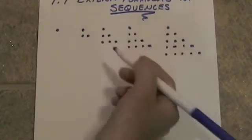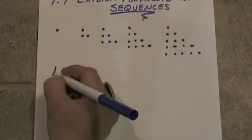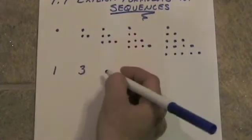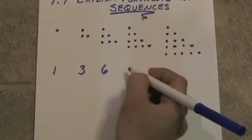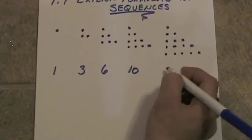Now let's count the dots and see what numbers have been generated here. The first term is one, the second term is three, the next term is six, the fourth term is ten, and the fifth term is fifteen.